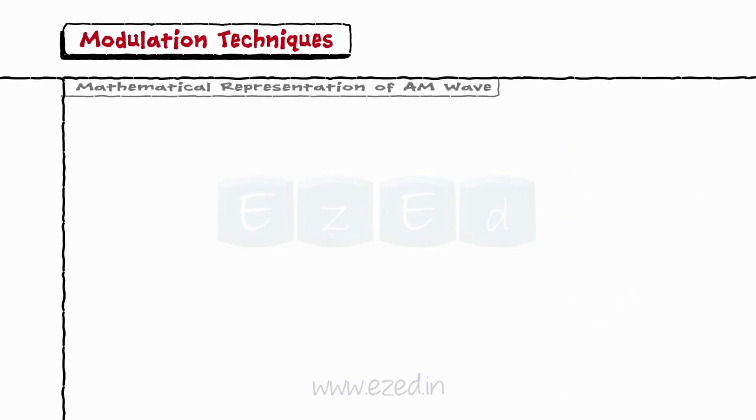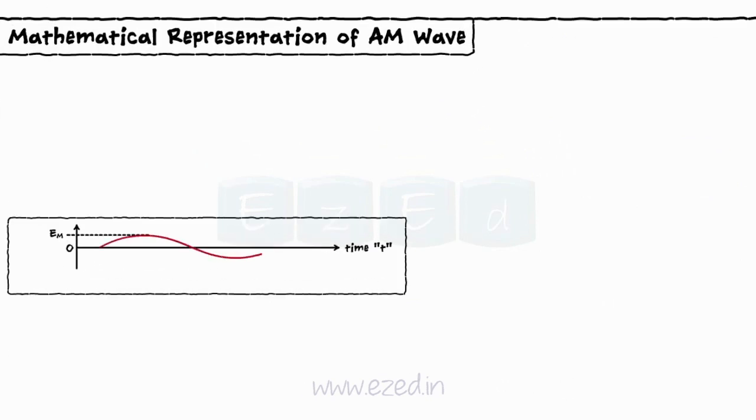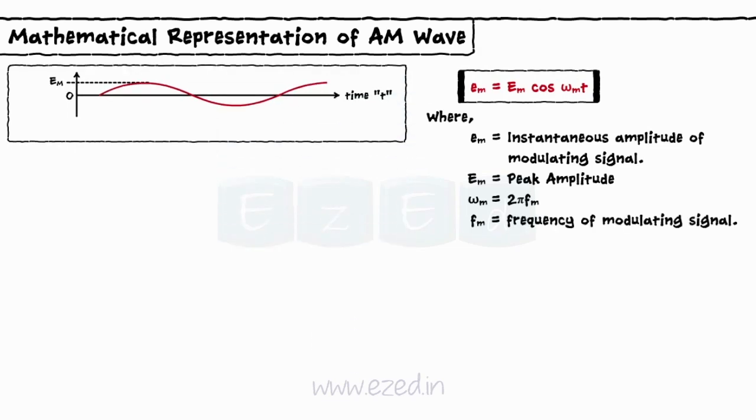Now, let's analyze the AM signal mathematically. Assuming the modulating signal is to be sinusoidal, it can be represented as EM equals EM into cos omega m into t, where small em equals instantaneous amplitude of modulating signal, EM equals peak amplitude, Omega m equals 2 pi fm, and fm equals frequency of modulating signal.